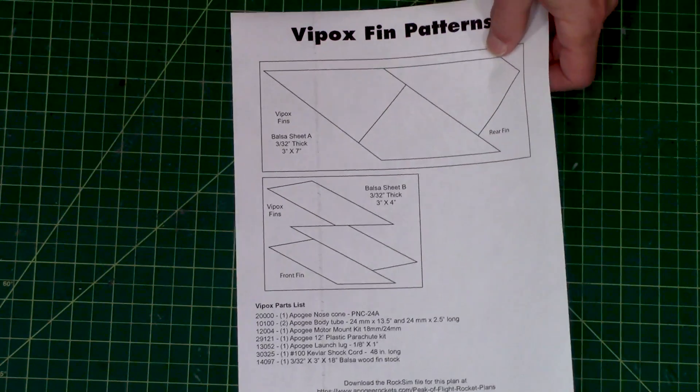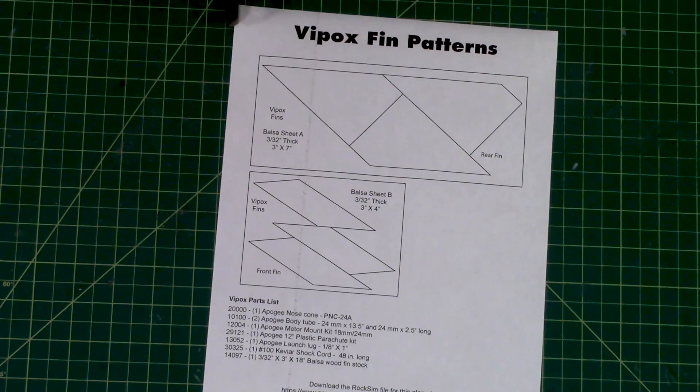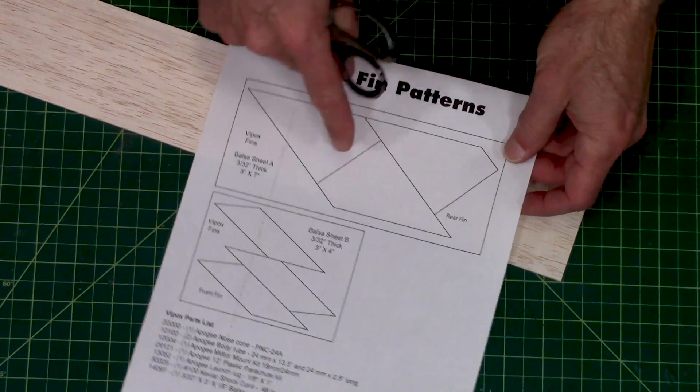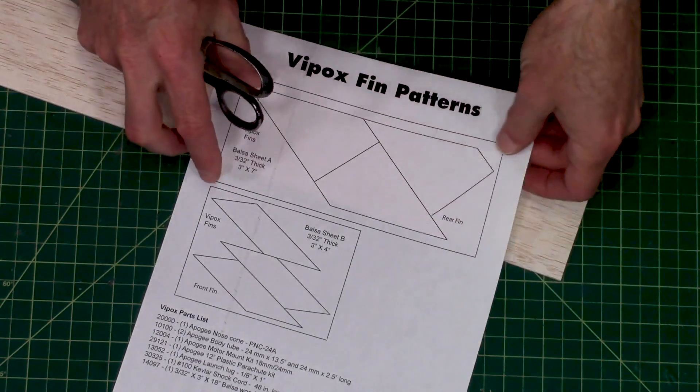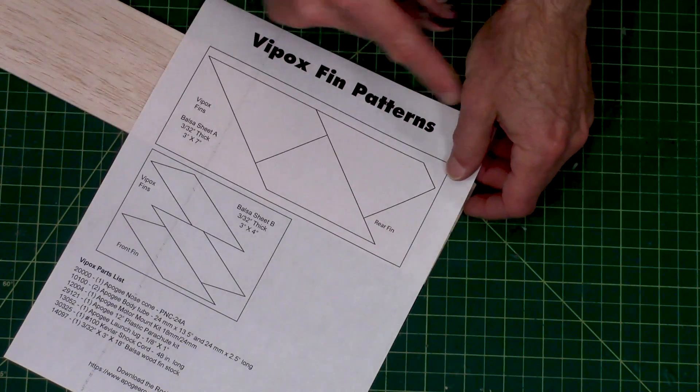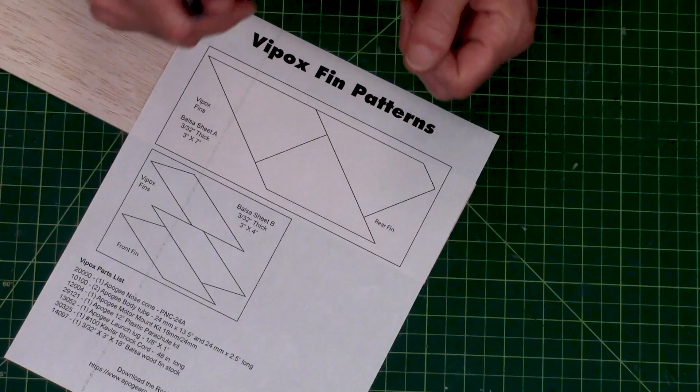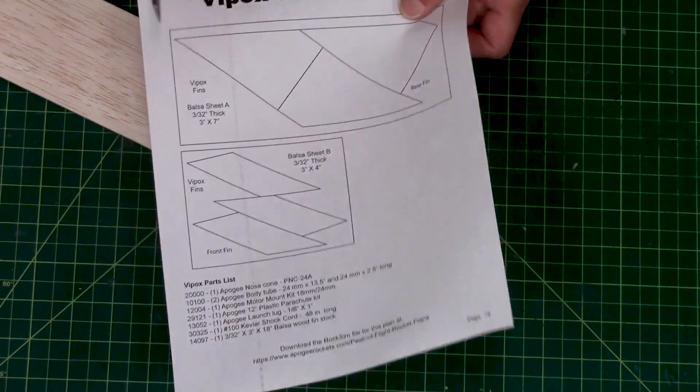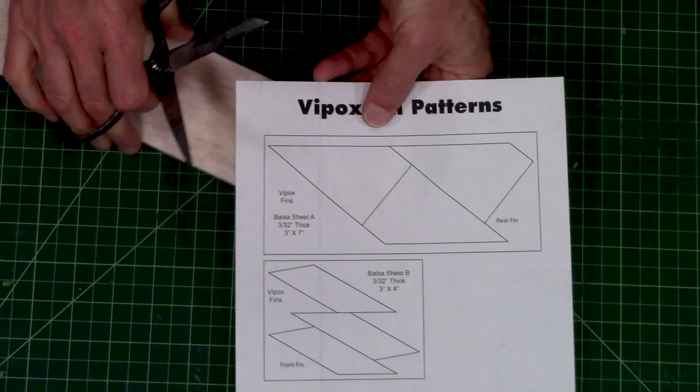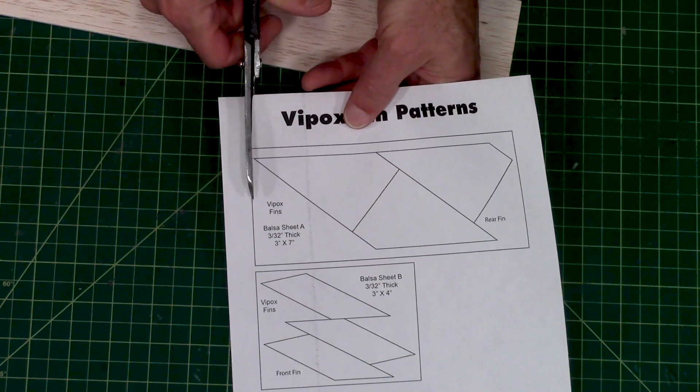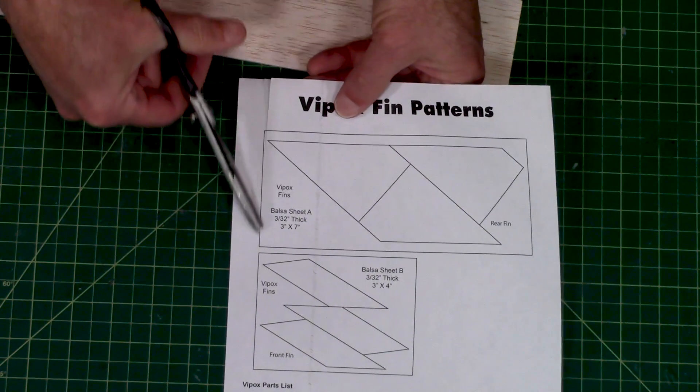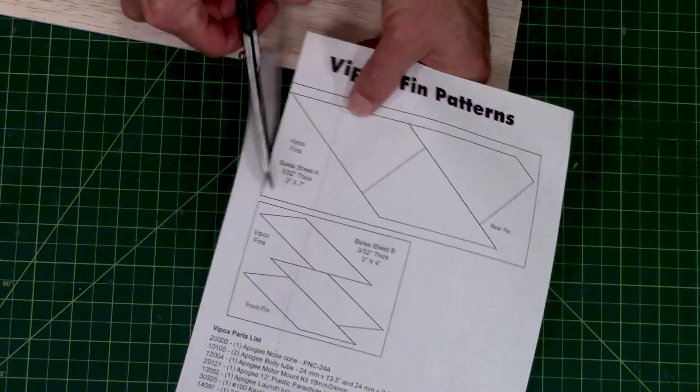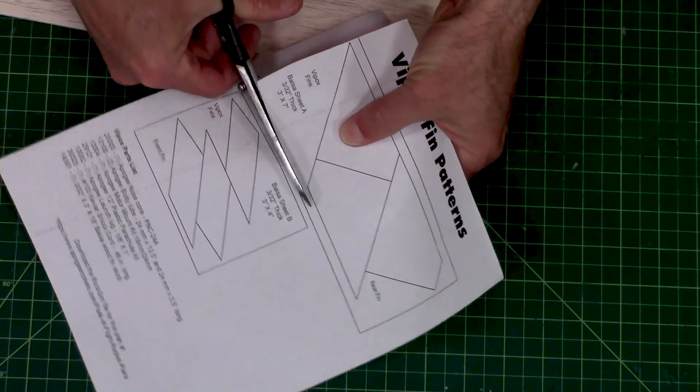Next we're going to cut this out. These are already laid out so that the grain of the wood is in the right direction. If you lay it onto the wood like this, all the grain is in the right direction so that your fins are strong. That's important, having the wood grain in the right direction. When I cut these out I usually cut inside the line. It's not important that you actually have the line on there.